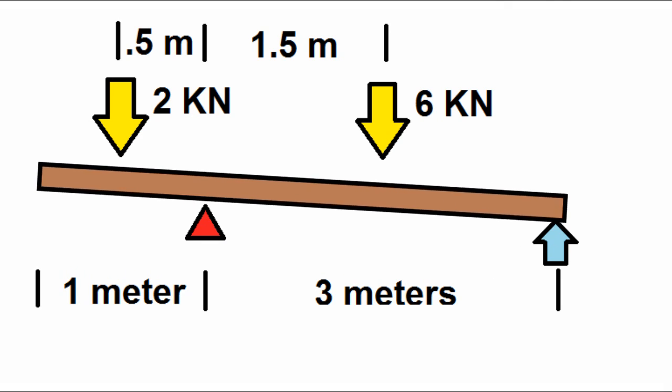We're going to be using the red triangle as the fulcrum, and then we have to measure the forces from there. We have two kilonewtons and six kilonewtons. We have two kilonewtons from the one meter times two kilonewtons per meter. Then we have six from the three meters times two kilonewtons per meter.